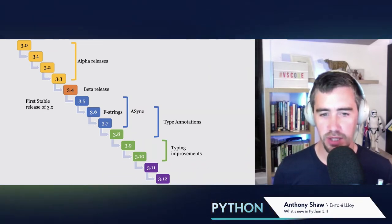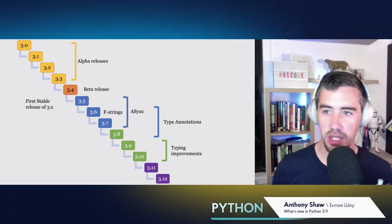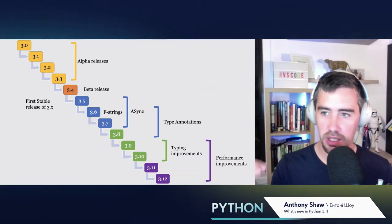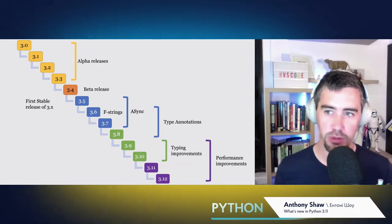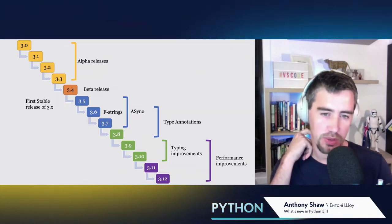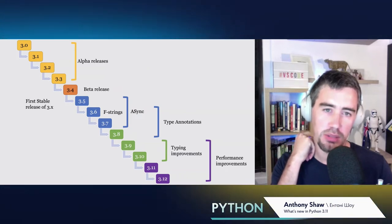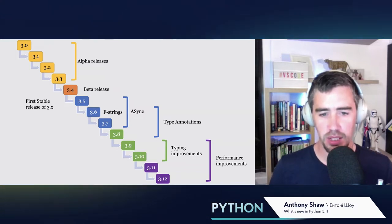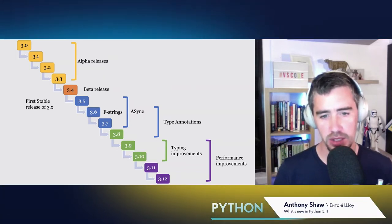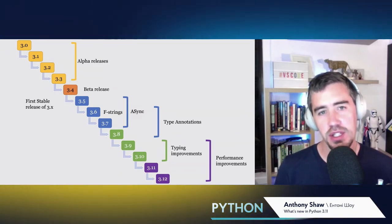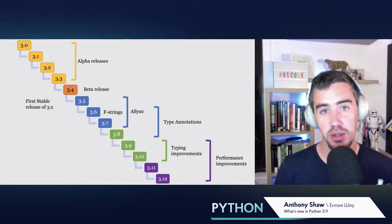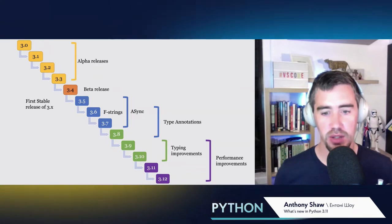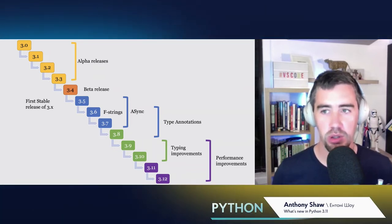The typing system is really improving the quality of a lot of Python code by being able to annotate types. Where we're going from 3.9 to 3.12, the focus is on performance. There's a team of people working on making Python faster, and we're going to start to see some of those changes coming out in 3.10, 3.11 and 3.12.